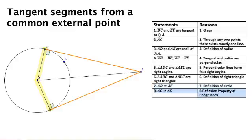And then through the reflexive property of congruency, we know that this segment is congruent to itself, which also happens to be the hypotenuse of each right triangle.